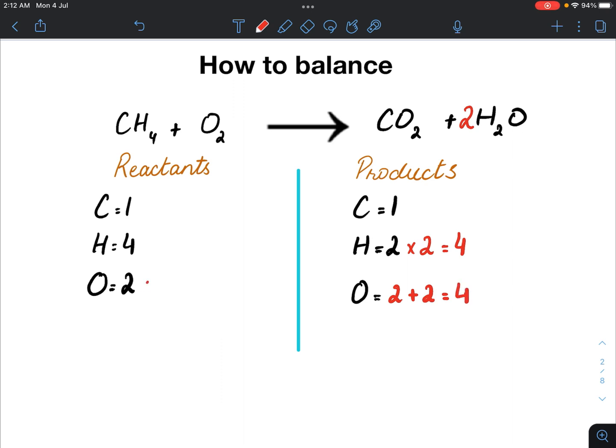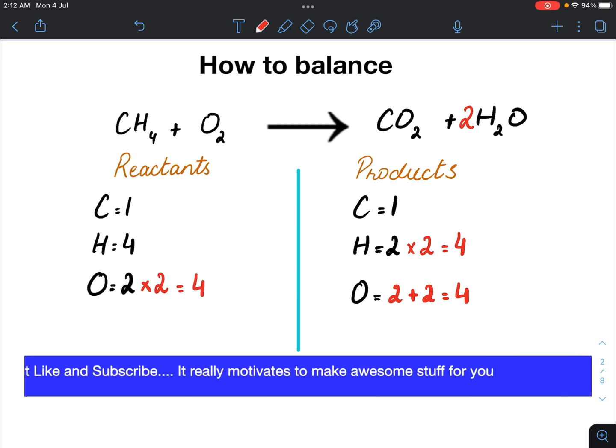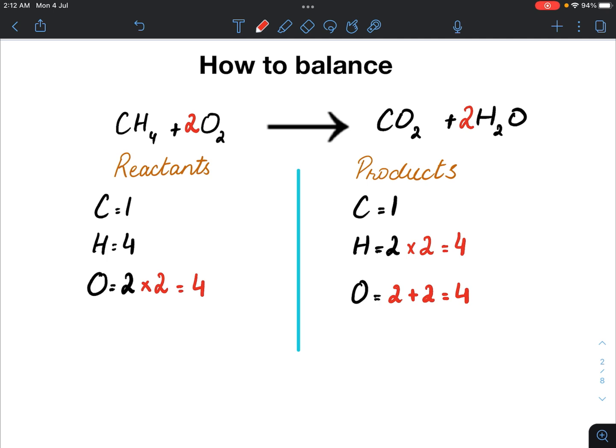And here, we have to multiply this two oxygen with coefficient 2 to give us four oxygens. Now, I put my coefficient with the oxygen and we get this equation balanced.